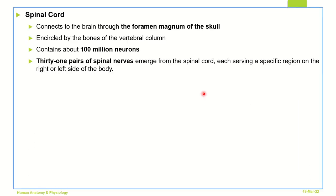Now let us understand the spinal cord. The spinal cord is a portion of the central nervous system that connects the brain through the foramen magnum of the skull. It is also encircled by bones of the vertebral column. Just like the brain is enclosed within a skull, the spinal cord is enclosed within a vertebral column.